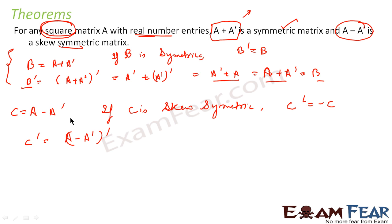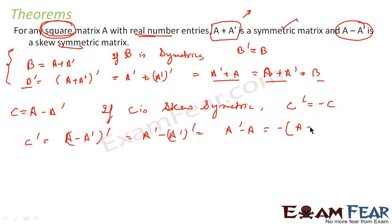Because C equals A minus A dash, C transpose becomes A dash minus A dash dash, which is A dash minus A — because the double transpose of a matrix equals the matrix itself. And this is nothing but minus of (A minus A dash). The value of A minus A dash is C, so this is nothing but minus C. I have proved C dash equals minus C, meaning C is a skew-symmetric matrix. Hence proof — I have proved both theorems.